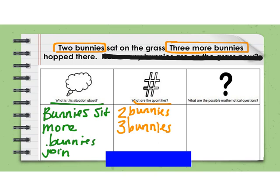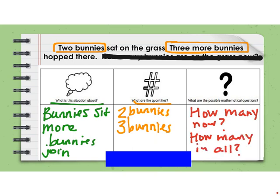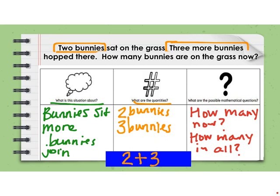On the third read, I want to think about what could this question possibly be — I've covered it up with a black marker smudge so we can think about what questions could be asked. Since we have two bunnies and more bunnies join them, maybe it's going to ask how many bunnies are there now, or how many in all. Let's look and see what the question says: it says how many bunnies are on the grass now. That tells me how many now or how many in all means addition.